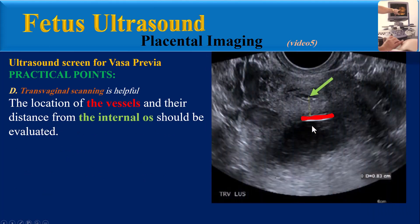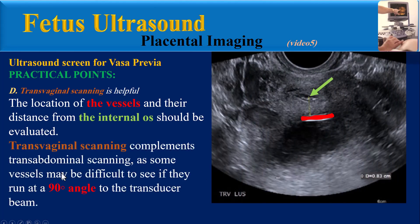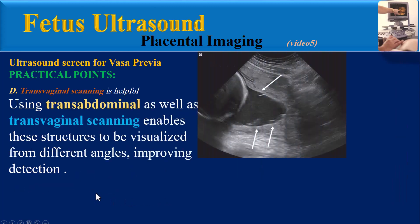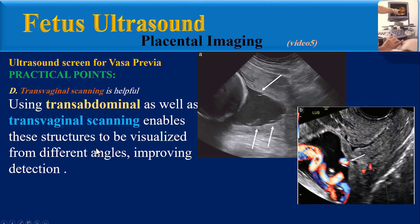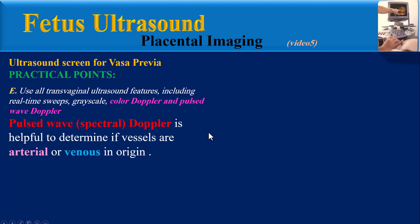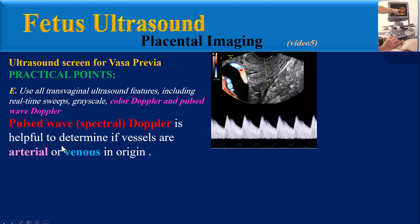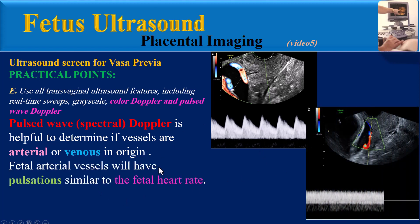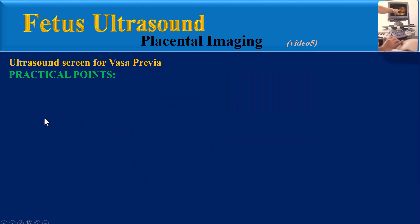The location of the vessels and their distance from the internal os should be evaluated. Transvaginal scanning complements transabdominal scanning, as vessels may be difficult to see if they run at a 90-degree angle to the transducer beam. Using transabdominal as well as transvaginal scanning enables structures to be visualized from different angles, improving detection. Use all transvaginal ultrasound features including real-time sweeps, grayscale, color, and pulsed wave Doppler. Pulsed wave Doppler is helpful to determine if vessels are arterial or venous; fetal arterial vessels will have pulsation similar to the fetal heart rate.